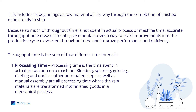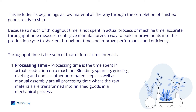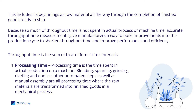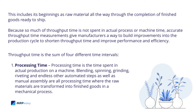Throughput time is the sum of four different time intervals. First, processing time. Processing time is the time spent in actual production on a machine. Blending, spinning, grinding, riveting, and endless other automated steps, as well as manual assembly, are all processing time, where the raw materials are transformed into finished goods in a mechanical process.